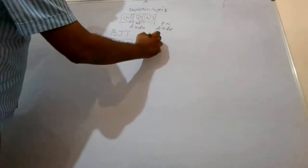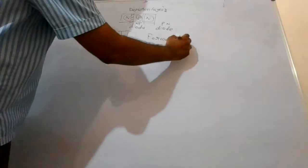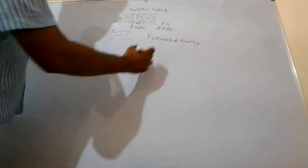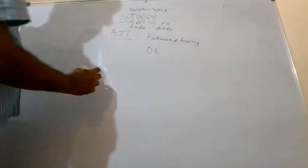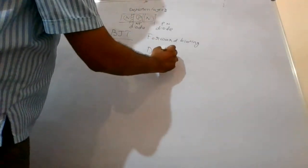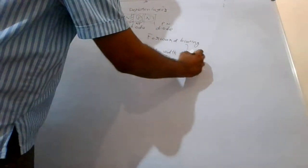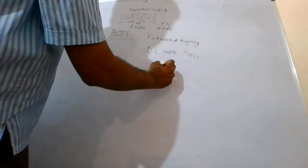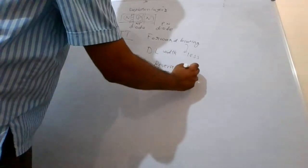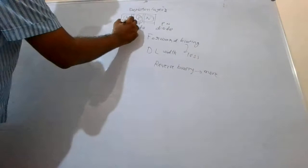For forward biasing, the depletion layer (DL) width will be less. For reverse biasing, the depletion layer width will be more — width meaning the physical width of the depletion region.